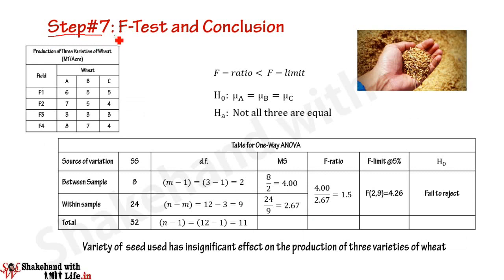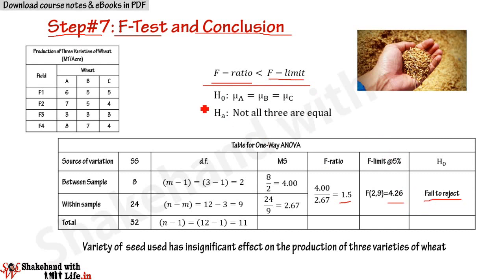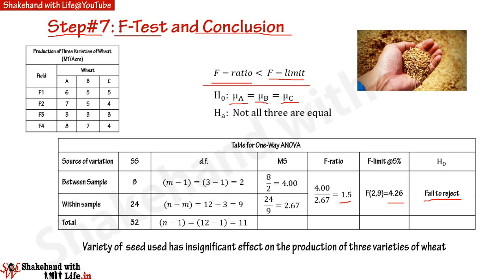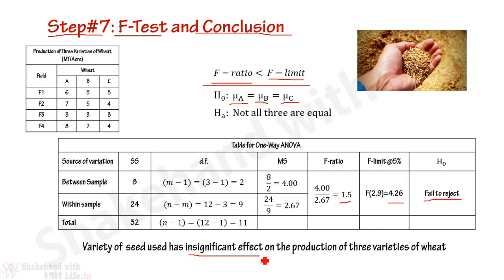In step 7, we perform the F-test and draw a conclusion. The F-ratio is 1.5 and the F limit is 4.26. Since F-ratio < F-limit, we fail to reject the null hypothesis μA = μB = μC. We conclude that the variety of seed has an insignificant effect — the variety of seed has no effect on the production of the three varieties of wheat.